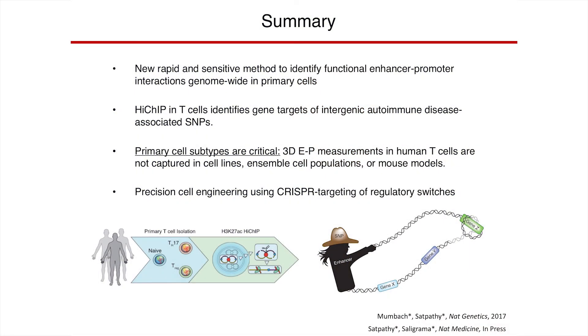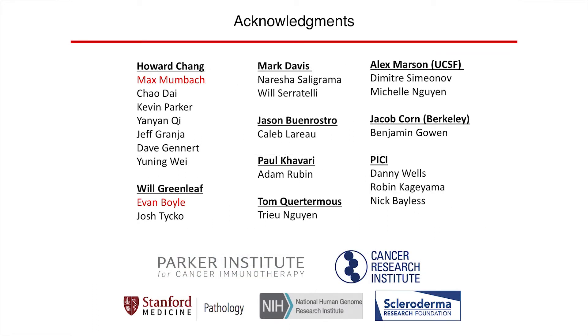To summarize: we are developing new tools to identify functional enhancer-promoter interactions genome-wide in a single assay that works in primary cells. We've focused on immune cells for autoimmune disease, but this should be applicable to any cell type or disease model. It's really important to do this in the cell type you care about — interactions we find in primary T cell subtypes are much more difficult to find in cell lines, ensemble populations, or mouse models. Moving forward, we're thinking about these regions as regulatory switches that we can engineer for therapeutic purposes. Thanks to Howard Chang's group, Will Greenleaf, and graduate student Max Mombach.